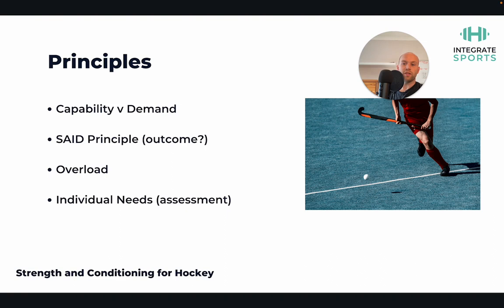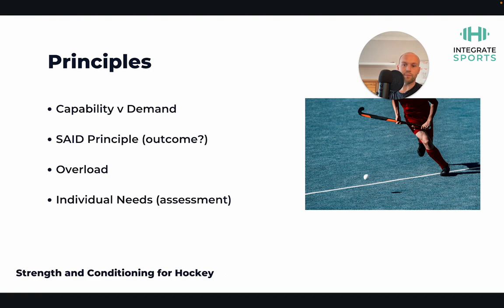Overload must be included to enable adaptation and can come in the form of frequency, volume, intensity, and density. Individual needs also require us to base a strength training program on assessment. Movement-based and tissue capacity assessments help guide us towards improving the limiting factor for certain athletes. For example, if an athlete is extremely limited in posterior chain range of motion, trying to load maximally through a hip hinge is not effective — increasing range of motion first would be more appropriate.